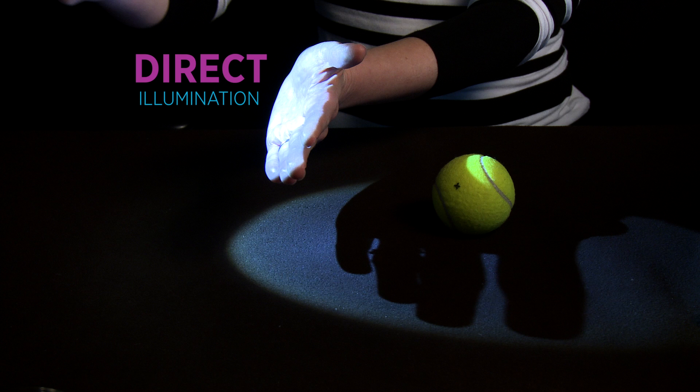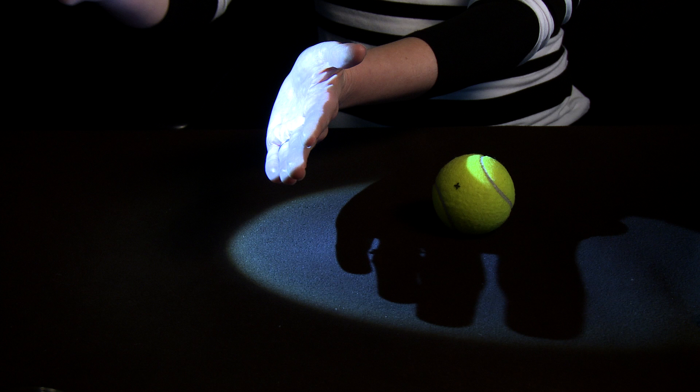In the real world, some of the light comes from other objects in the scene as well. Notice that I can bounce light off this card, which you can see adds to the light hitting my face. This is an example of indirect illumination.